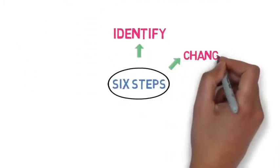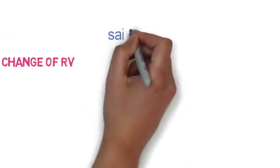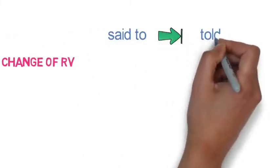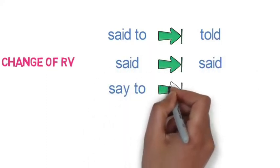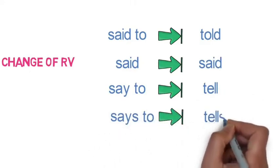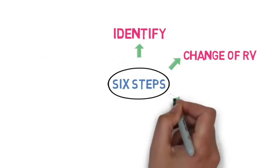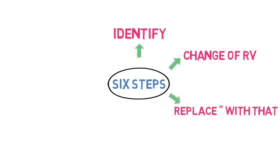The second step is change of reporting verb. Reporting verb will change in the following way: 'say to' will be converted to 'told'; 'said' will remain as 'said'; 'say to' (present) will be converted to 'tell'; and 'says to' will be converted to 'tells.' The third step is to replace inverted commas with 'that.' We will remove the comma and inverted commas and join the reported speech with 'that.'